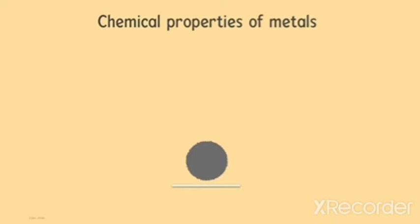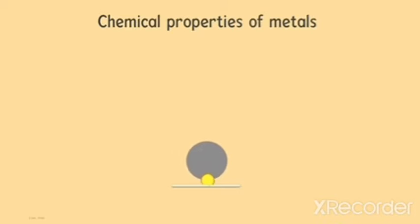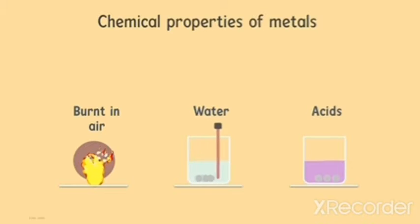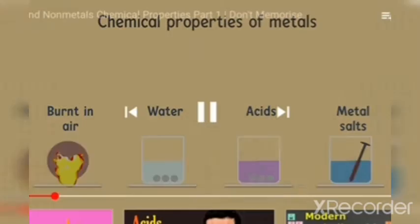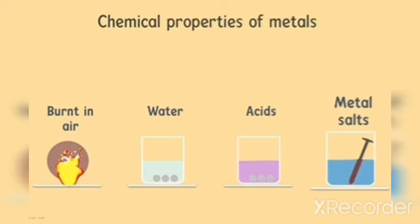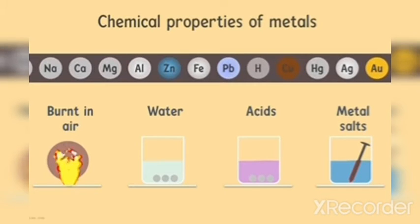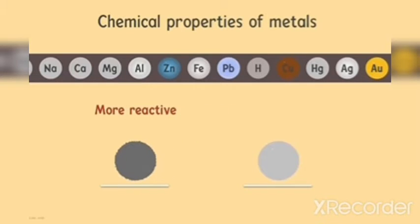When looking at chemical properties of metals, there are a few things we will examine: what happens when metals are burnt in air, when metals react with water, when metals react with acids, and when metals react with solutions of other metal salts. In all four categories, we will look at how reactive the metals are — if metals react easily they are more reactive; if it's more difficult for them to react, they are less reactive.